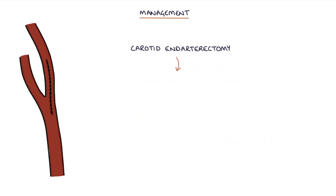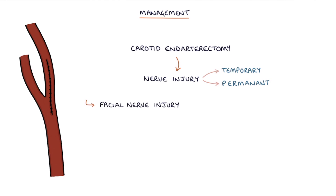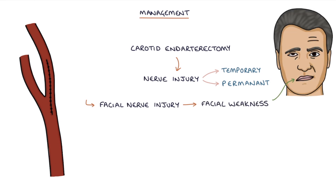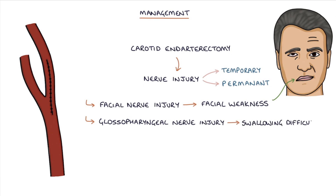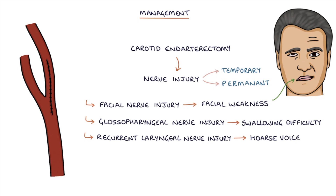During an endarterectomy, nearby nerves can be injured, and this may be temporary or permanent. The symptoms depend on the nerve that's injured. If the facial nerve is injured, this can cause a facial weakness — often the marginal mandibular branch is injured, causing drooping of the lower lip. If the glossopharyngeal nerve is injured, this can cause swallowing difficulties. If the recurrent laryngeal nerve is injured, which is a branch of the vagus nerve, this can cause a hoarse voice. And if the hypoglossal nerve is injured, this can cause unilateral tongue paralysis.